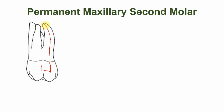In the mesio-buccal root, the mesio-buccal canal has a greater tendency of curvature in the apical third, as you can see. While the disto-buccal canal is nearly straight. This is the pulp chamber, and it is roughly rectangular in shape.